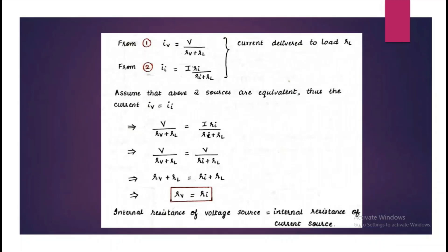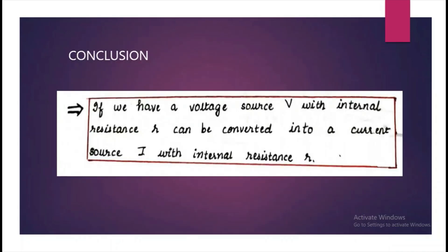What we understand from this is that the internal resistance of voltage source is equal to internal resistance of current source. We can conclude that the voltage source V with internal resistance R in series can be converted into a current source I with internal resistance R itself but that will be in parallel.